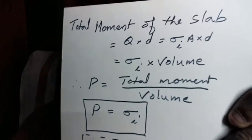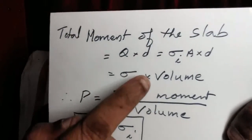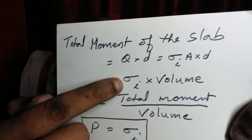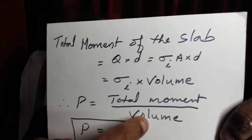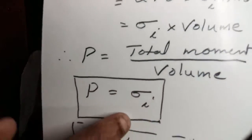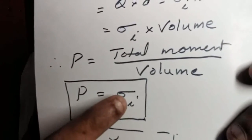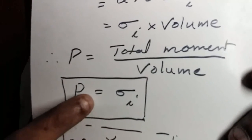Area times thickness represents the volume of the dielectric slab. Therefore the total dipole moment of the slab is sigma i into volume. Therefore the total dipole moment per unit volume is total moment by volume, which equals sigma i. This sigma i, or dipole moment per unit volume of the slab, is represented by the symbol capital P. Capital P is called the polarization vector — a quantity which represents the extent of polarization produced in the material. P is a constant for a particular substance.